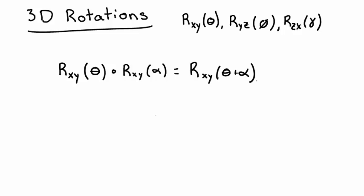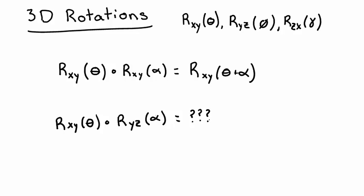Nothing has really changed since we did this in 2 dimensions. Things get a little more complicated, however, when we start combining a rotation in the xy plane with a rotation in the yz plane. It's true that this yields a net rotation in some plane by some angle, but it's not always easy to figure out which plane we've rotated about or by what angle. More often than not, the plane of the net rotation isn't one of the standard xy, yz, or zx planes, but rather some other plane in between.